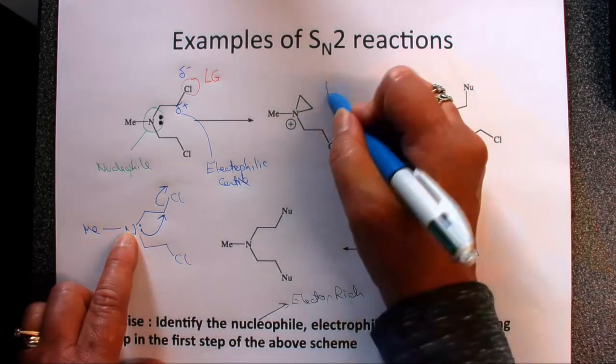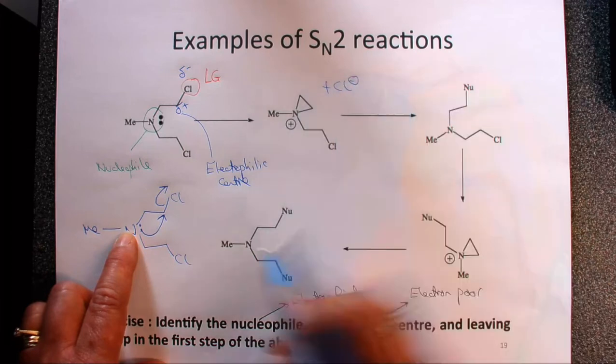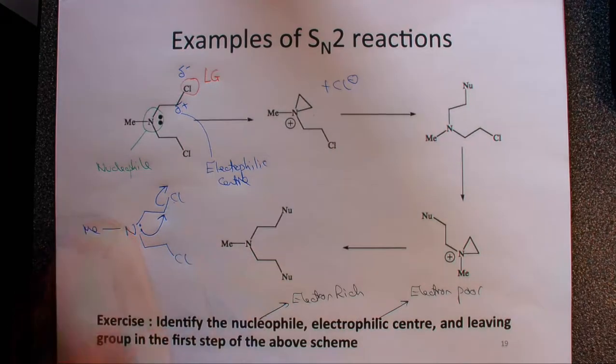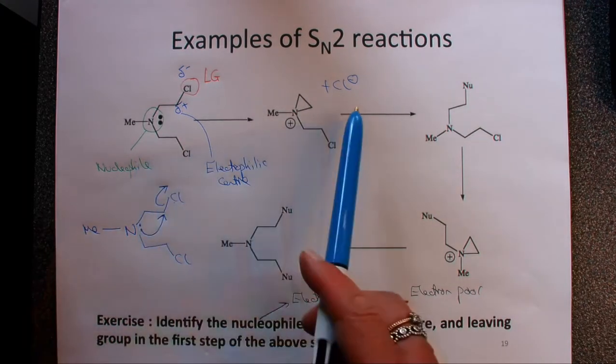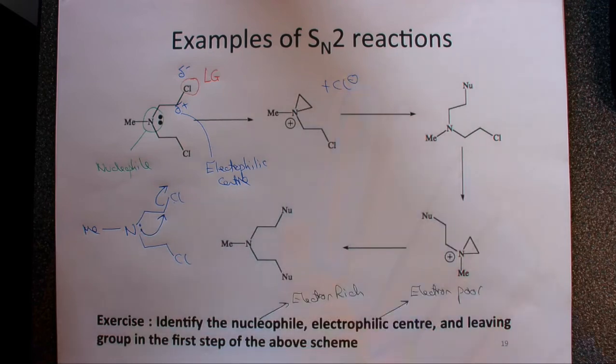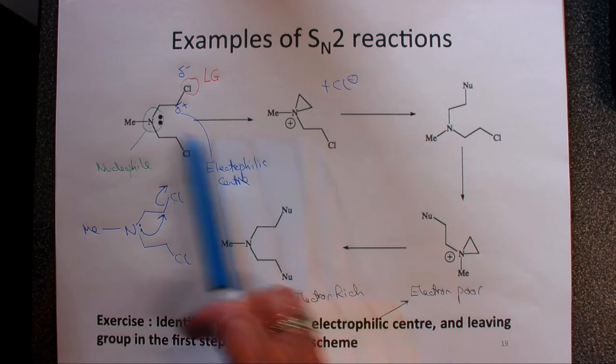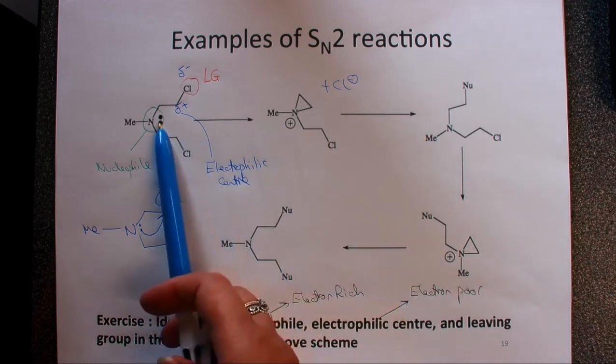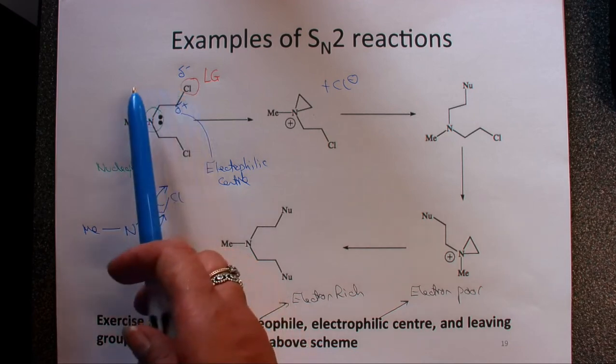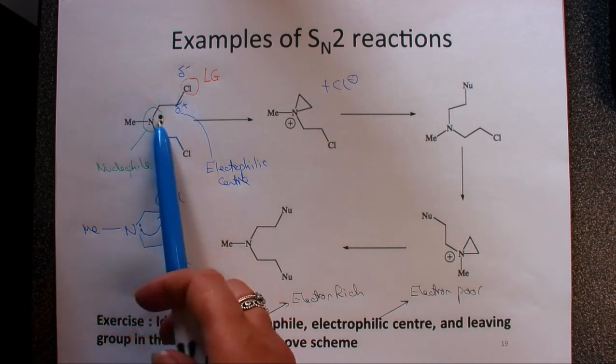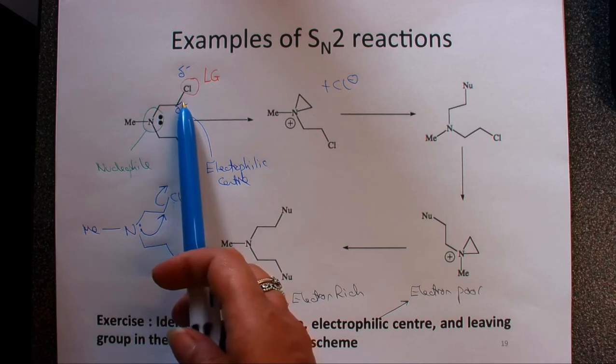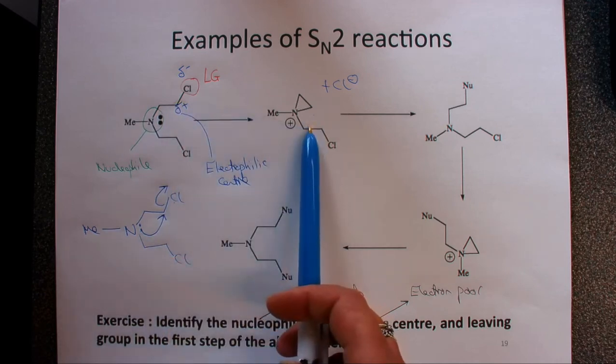We've also got Cl minus because we broke that off. Now the reason I chose this example is because this is very relevant in drug design and discovery. These molecules have been used extensively in anti-cancer therapies because these molecules are really quite reactive. You've got the nucleophile and the leaving group within the same molecule, so it would form this species very readily.